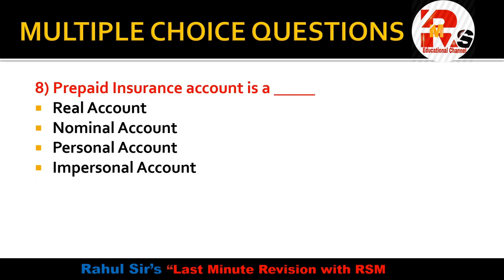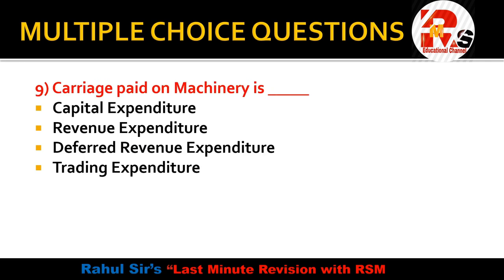Question eight: prepaid insurance account is a dash account — options are real account, nominal account, personal account, or impersonal account. Prepaid means we have already paid; it can also be called unexpired insurance. Prepaid salary, prepaid insurance — these are considered personal accounts because they are shown on the asset side of the balance sheet.